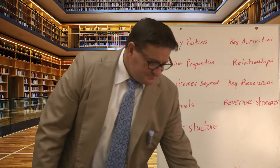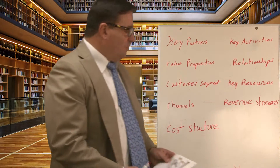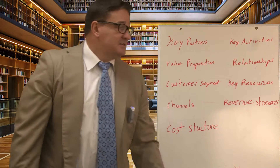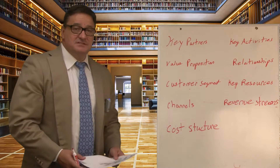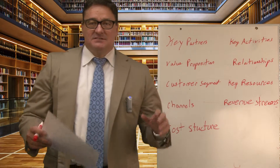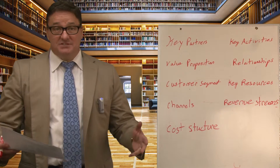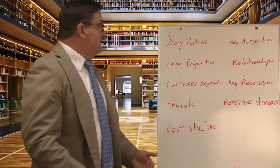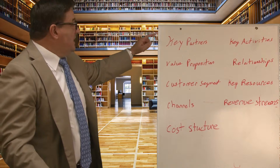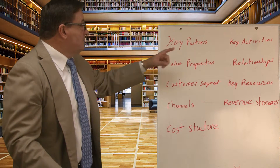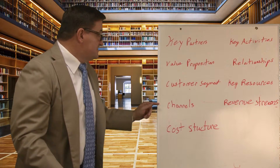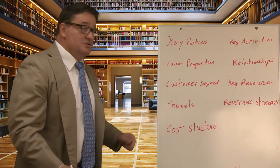What we use is a technique called the Business Model Canvas. The Business Model Canvas covers nine key areas that every business should know about themselves. The nine areas we look at are: key partners, key activities, value proposition, relationships, customer segment, key resources, channels, revenue stream, and cost structure.